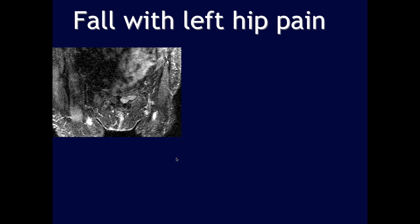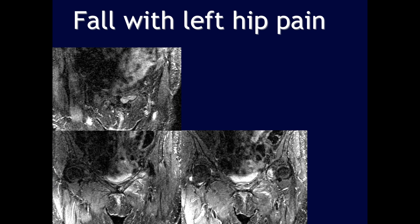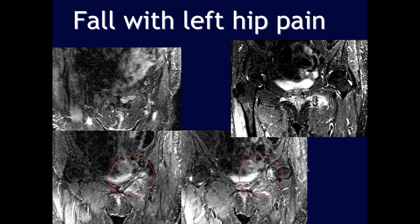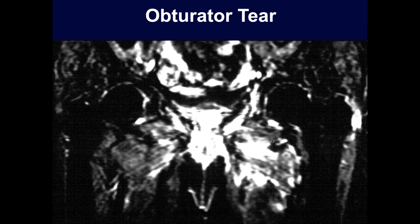A case of fall with left hip pain. Imaging appears anterior, showing edema within the left superior pubic ramus with a fracture extending through the ramus consistent with acute fracture of the superior pubic ramus. It is unclear whether there is an additional inferior pubic ramus fracture.